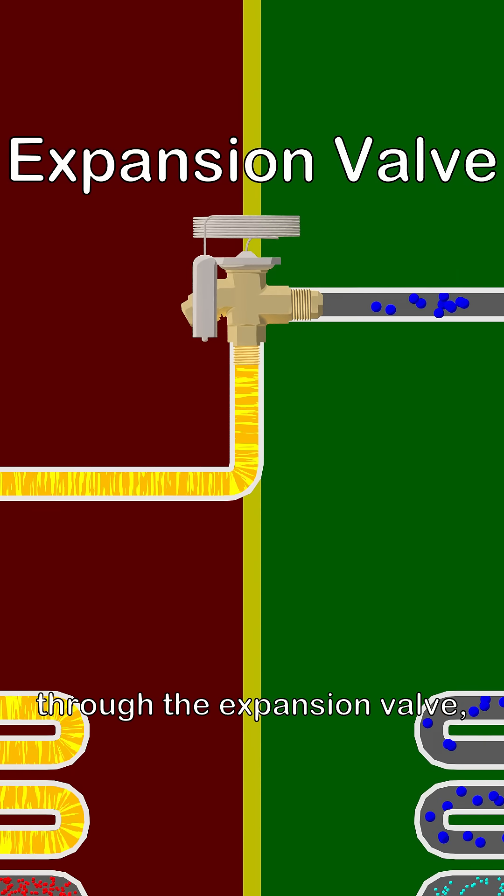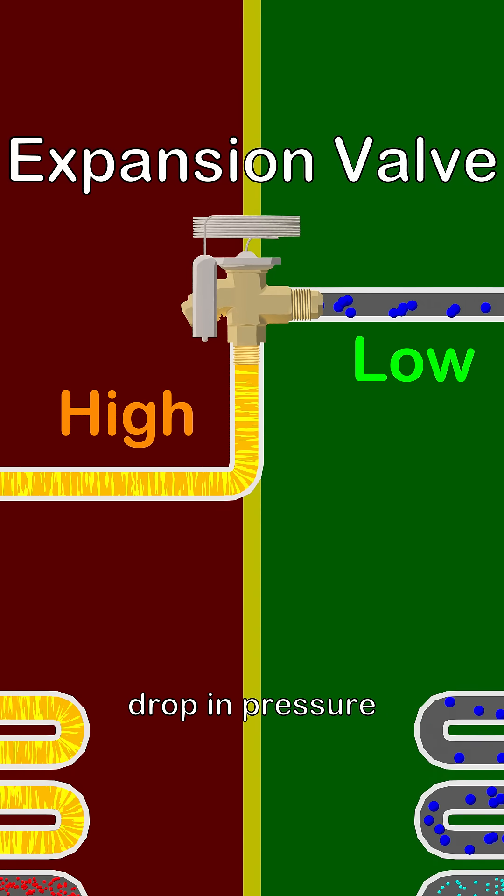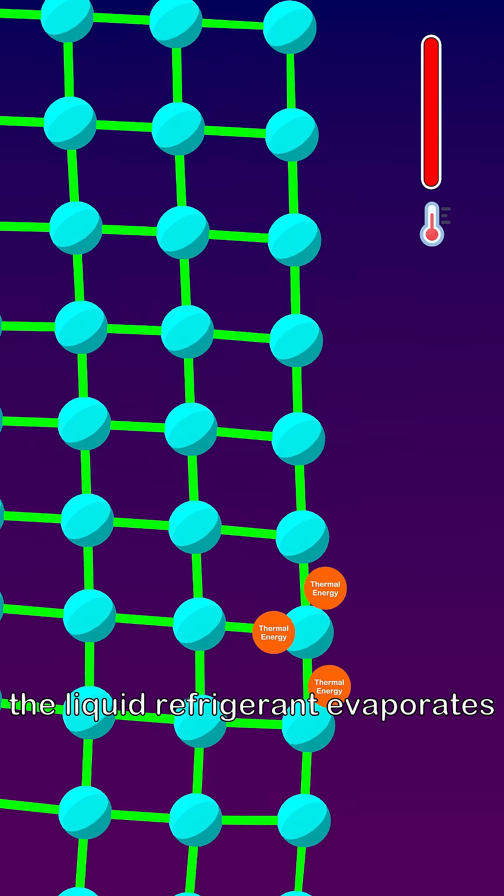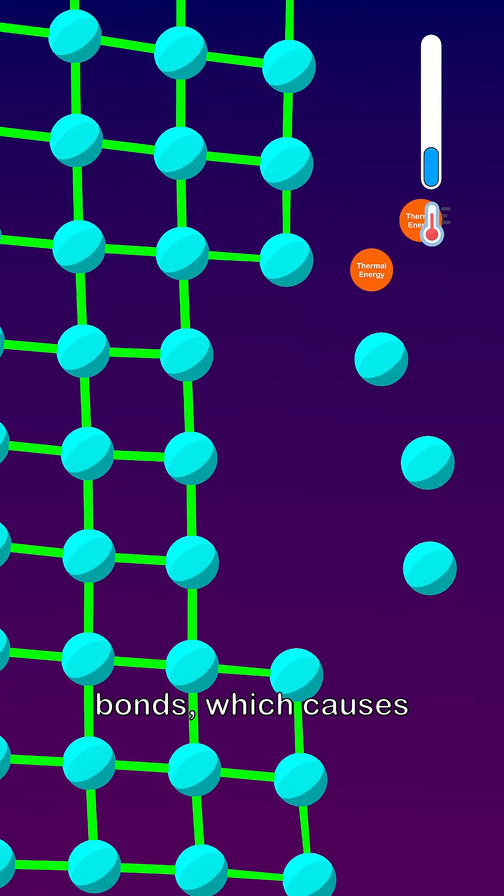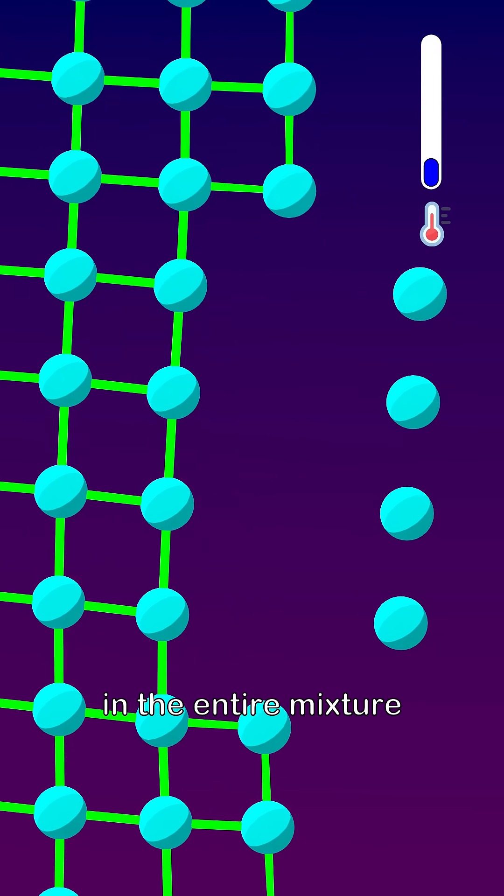As the refrigerant passes through the expansion valve, it experiences a sudden drop in pressure. In response, a portion of the liquid refrigerant evaporates by consuming its own thermal energy to overcome molecular bonds, which causes a significant temperature drop in the entire mixture.